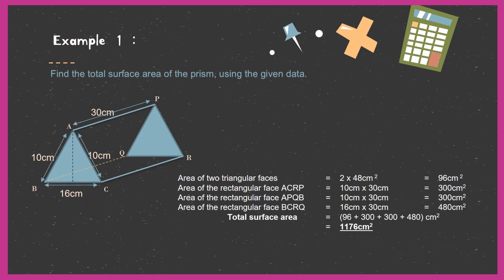Now let's find the total surface area. The area of the 2 triangular faces is 48 multiplied by 2, giving 96 cm². The rectangular face ACRP has dimensions 30 by 10, giving 300 cm². The opposite rectangular face also has dimensions 30 by 10, giving another 300 cm². The bottom rectangular face has length 30 and width 16, giving 480 cm². Adding all five faces: 96 plus 300 plus 300 plus 480 equals 1176 square centimetres — the total surface area of this prism.